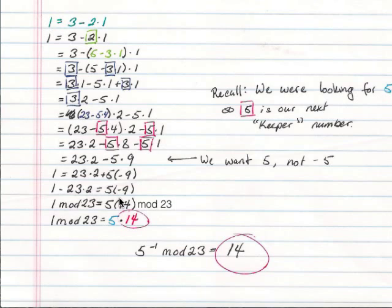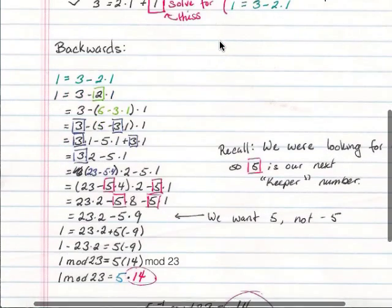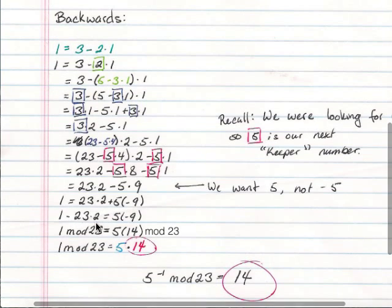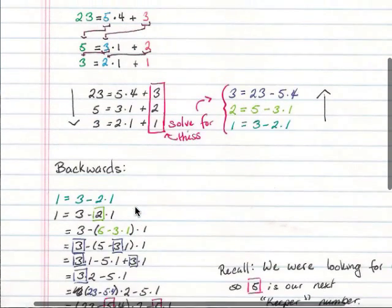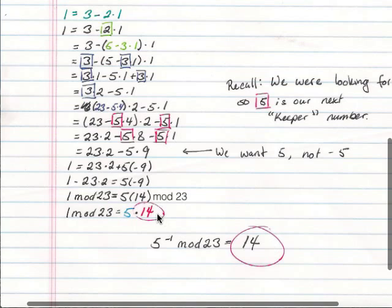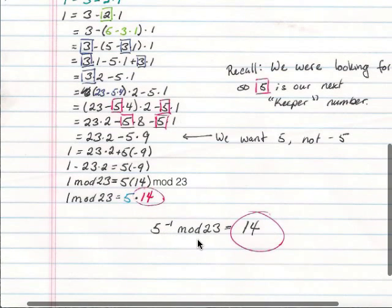And lastly, we want the 5 times something to be on the side by itself. So I moved the 23 times 2 over to this side right here, subtracting it over, and then luckily 23 was our modulus. Therefore 1 plus or minus 23 times something, anything, doesn't matter, will just be 1 mod 23. So the modulus goes away, goodbye. And that equals 5 times 14 mod 23. I changed our negative 9 to 14 just by adding 23 to this negative 9 here. So we have 1 mod 23 equals 5 times 14. When we get to 1 equals this original number times something, the something is our answer. Like I wrote here, the inverse of 5 mod 23 is 14.